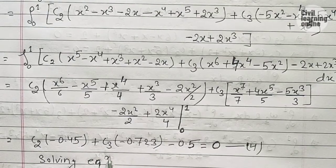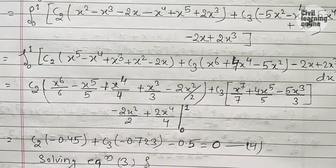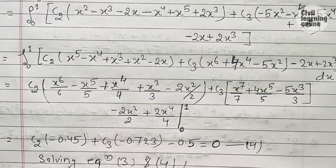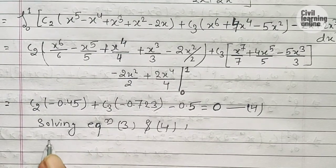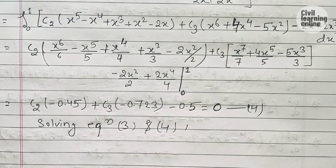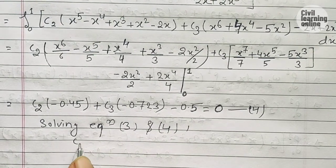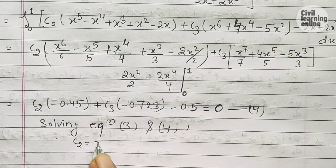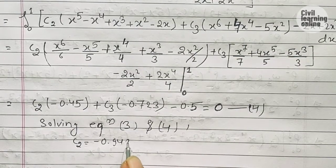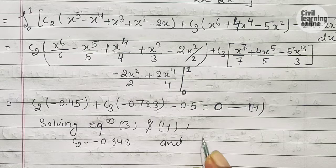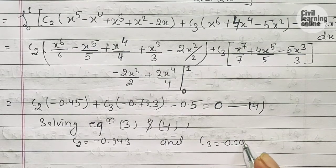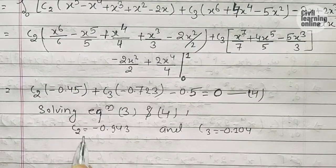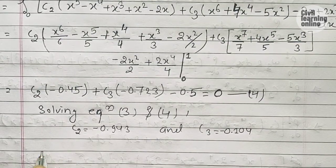Solving equations 3 and 4 simultaneously using a calculator, we get: c₂ = -0.943 and c₃ = -0.104.